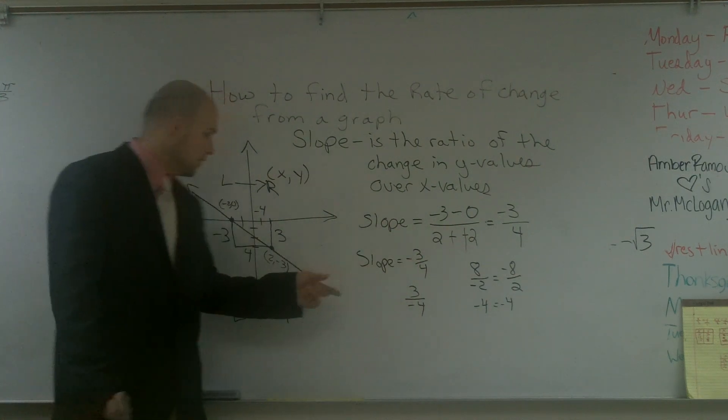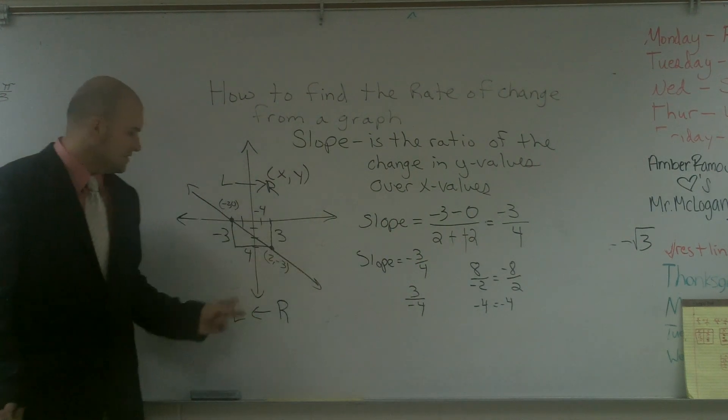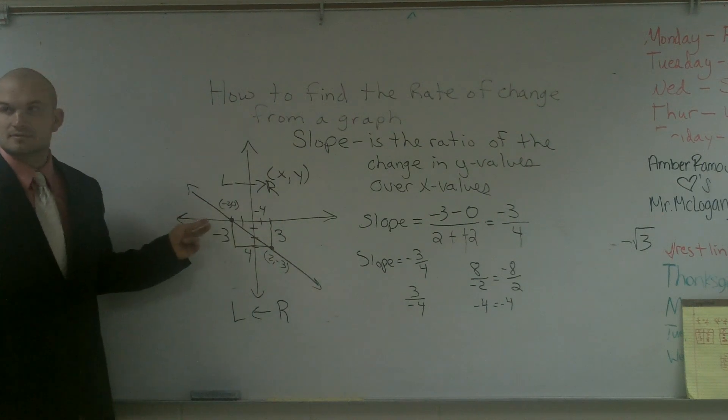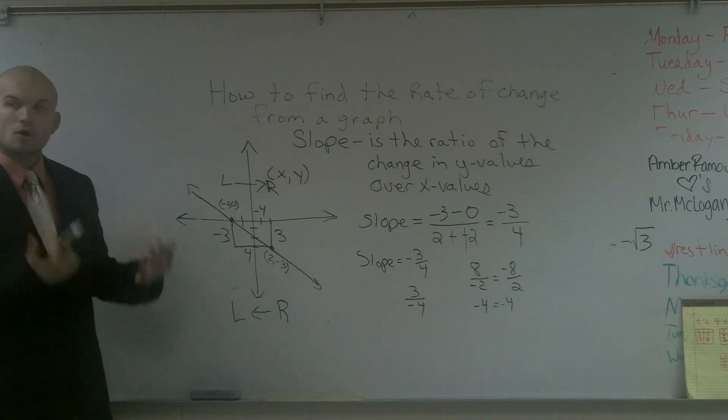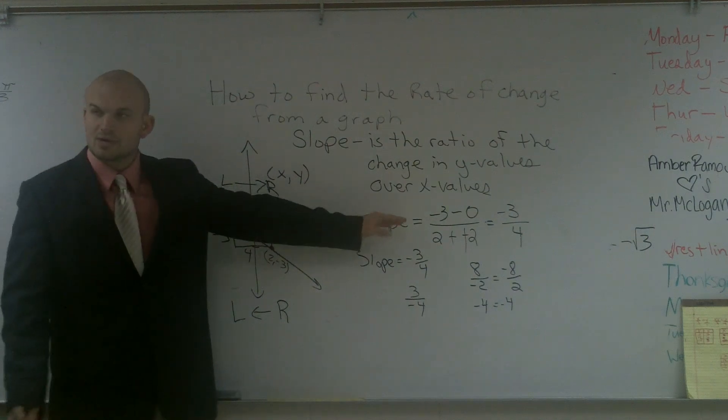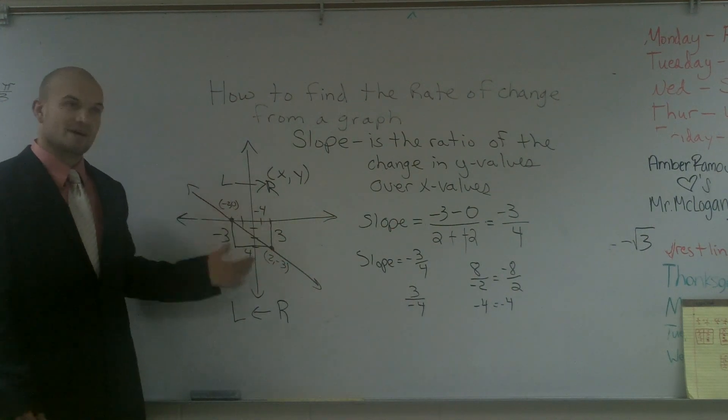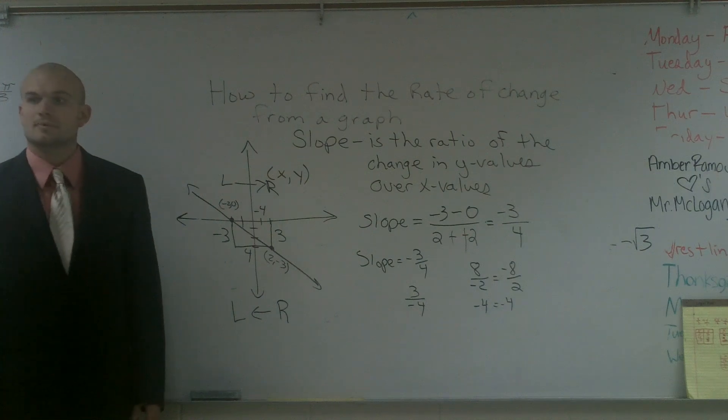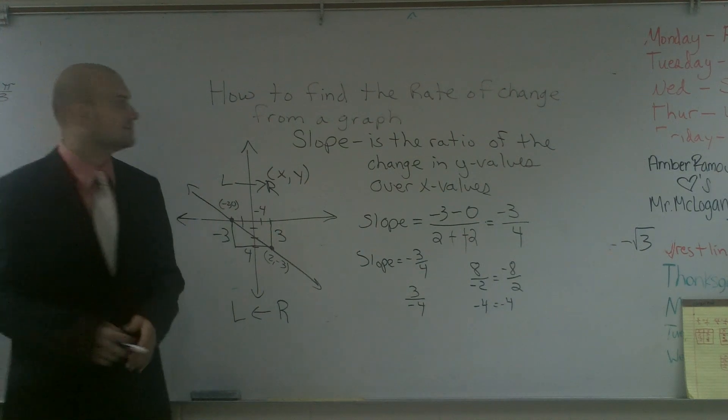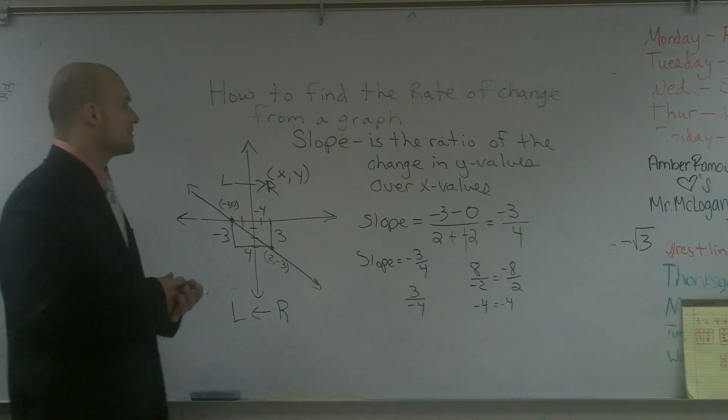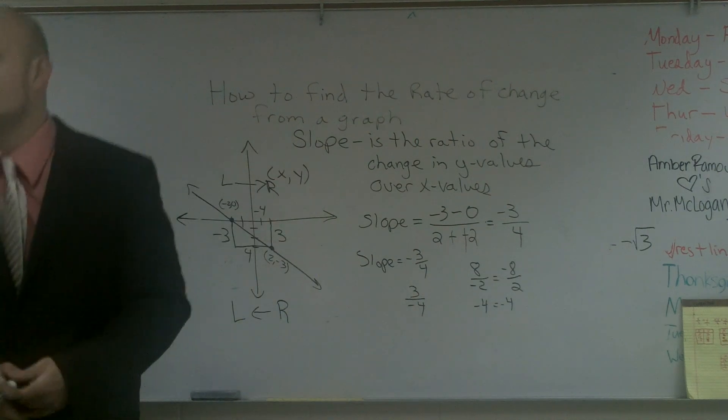The only difference is one goes left to right and the other one goes right to left. It depends how you read it. Or you can simply just use the algebraic way and take your two y values, subtract them, and then take your two x values and subtract them. That's how you find the rate of change from a graph. Remember, rate of change when dealing with a graph is what we like to call the slope.